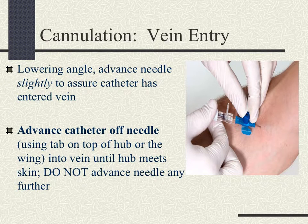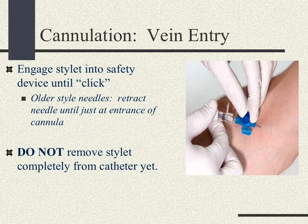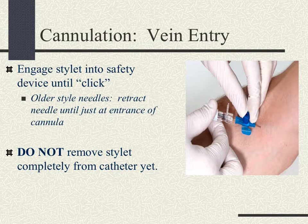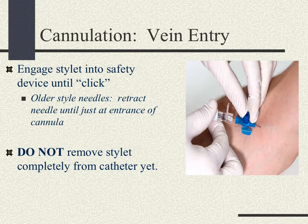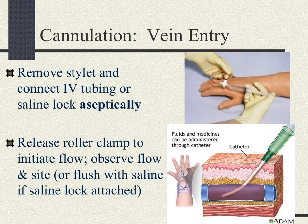Once you have blood return, lower the angle and advance the needle slightly to assure the catheter has entered the vein. Advance the catheter off the needle using the tab on top of the hub or the wing into the vein until the hub meets the skin — do not advance the needle further at this point. Engage the stylet into the safety device until it clicks. If using an older style needle, retract the needle to just at the entrance of the cannula — do not remove the stylet completely from the catheter yet.